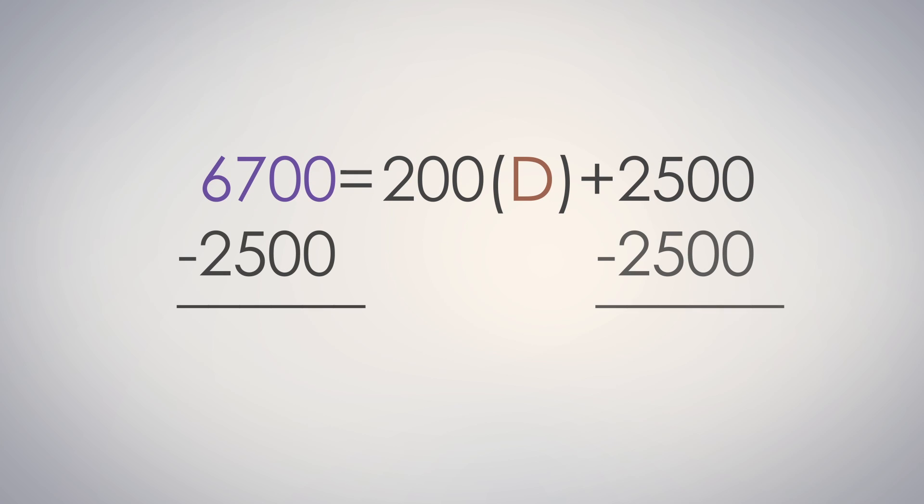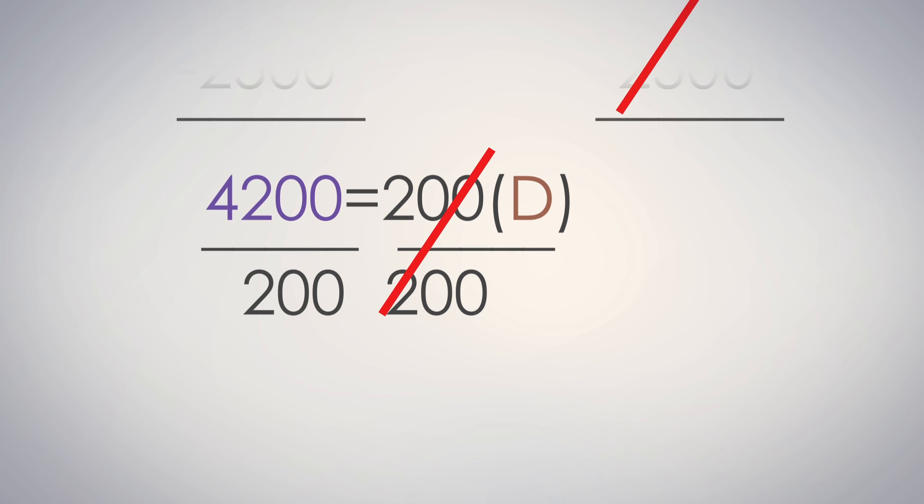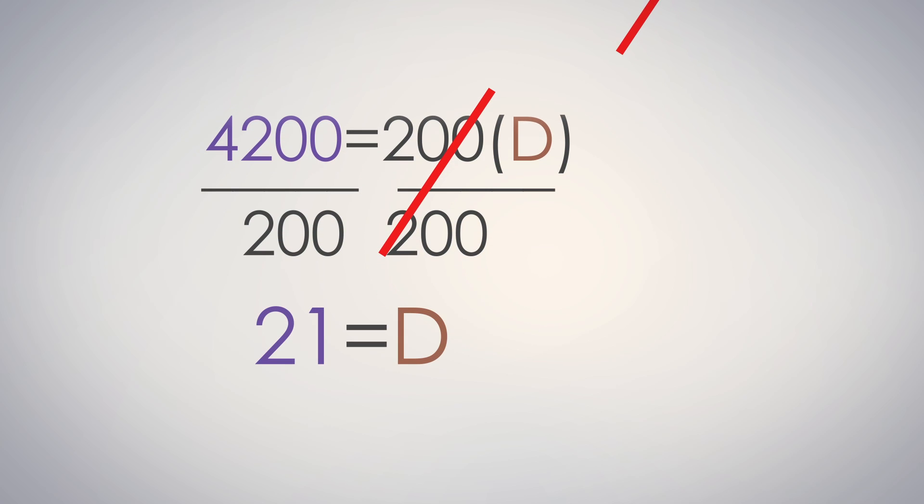It looks like we'll be able to divide both sides by 200. Now we have D by itself. $4,200 divided by $200 leaves us with 21. So it looks like the number of days you can afford to go on tour is 21 days.